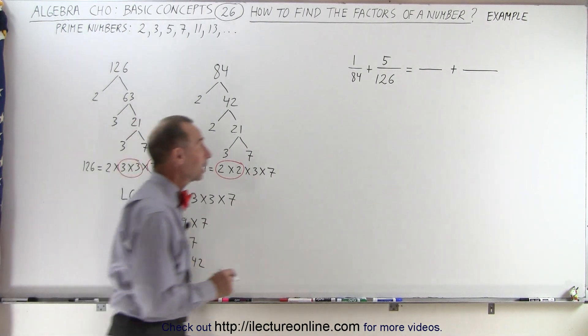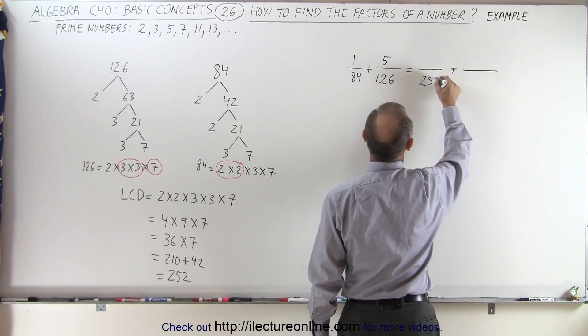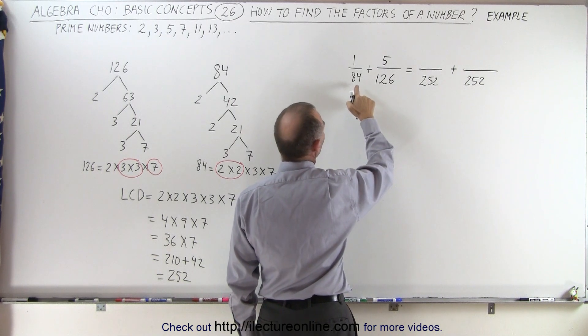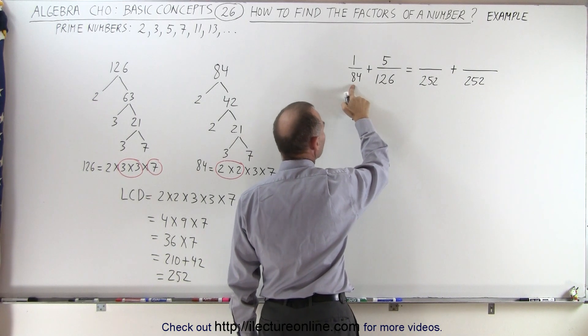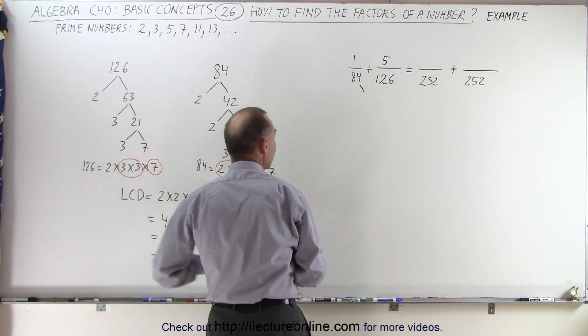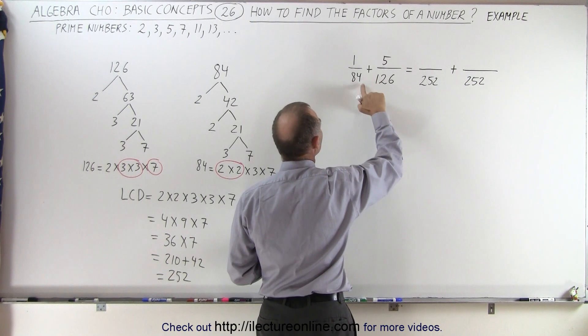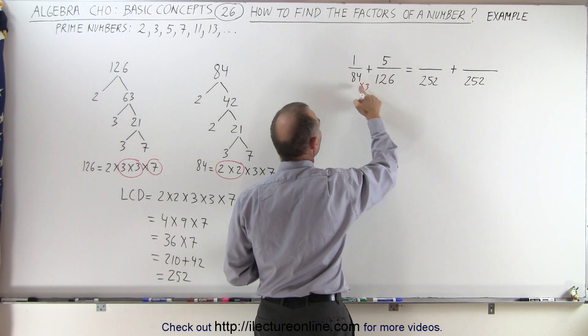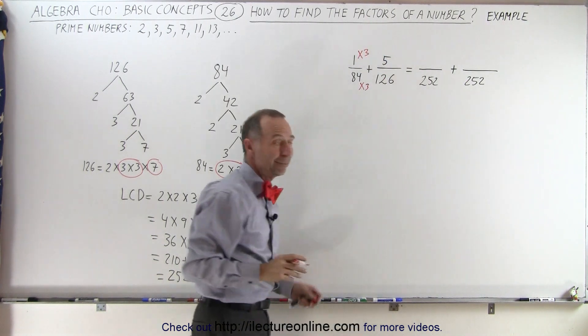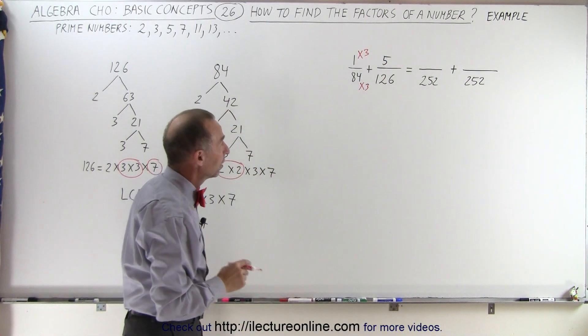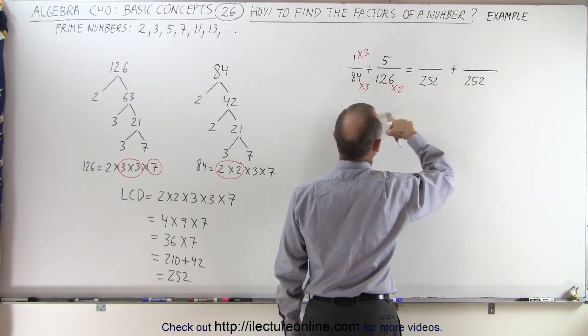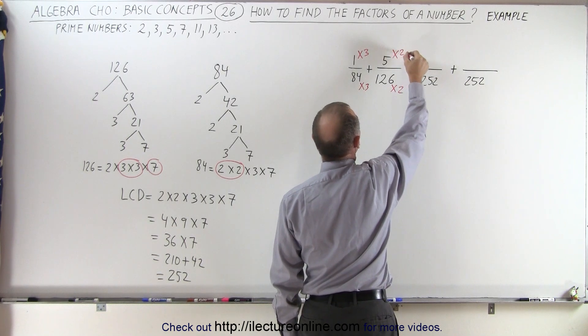The new common denominator is 252. How many times do we multiply 84 to get 252? Three times. So multiply the denominator by 3 (84×3=252), which means we also multiply the numerator by the same number. For the second fraction, multiply the denominator by 2 to get 252, and do the same to the numerator.